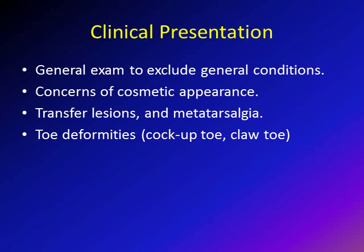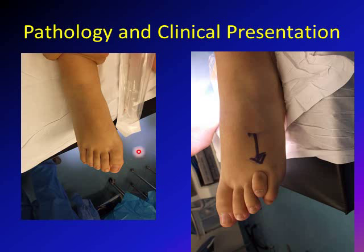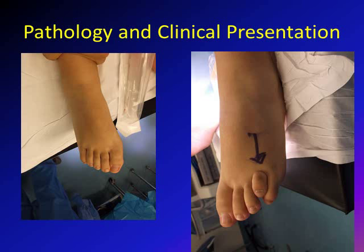Some patients present with toe deformity, like cock-up toe or claw toe. This is the right foot of a female patient aged 14. You can see her toes are aligned with no problem on the right side. However, on the left side, her fourth metatarsal toe is short — because the fourth metatarsal bone is short. The toe itself looks equal in length to the others, but it is starting at a much more proximal or recessed position, so it looks shorter. This is brachymetatarsia of the fourth metatarsal bone.